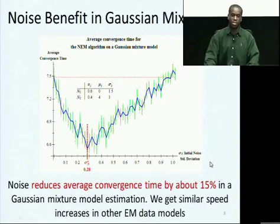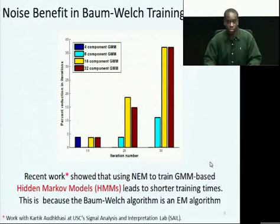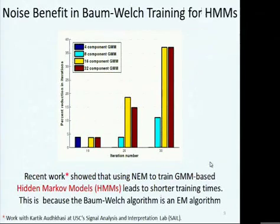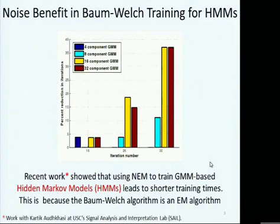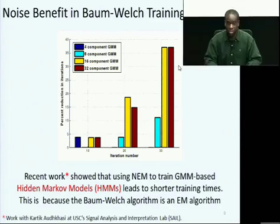We then applied this to a more complicated model for automated speech recognition. Most automated speech recognizers use hidden Markov models trained with the Baum-Welch algorithm, and the Baum-Welch algorithm is actually a version of the EM algorithm. This has been worked on in the speech processing lab, and we find we can get up to almost a 35% reduction in convergence time with the noisy EM algorithm.